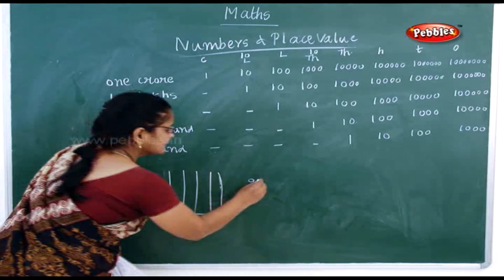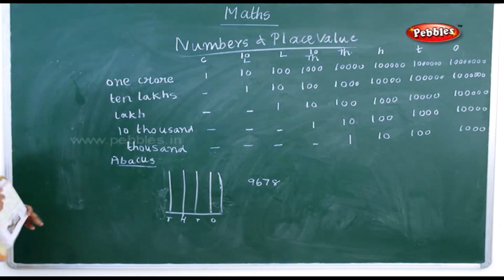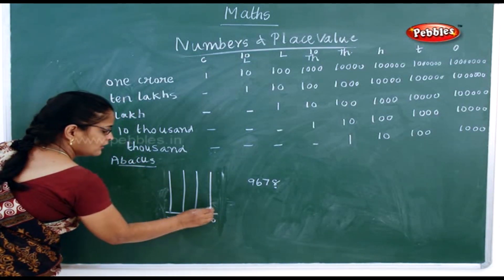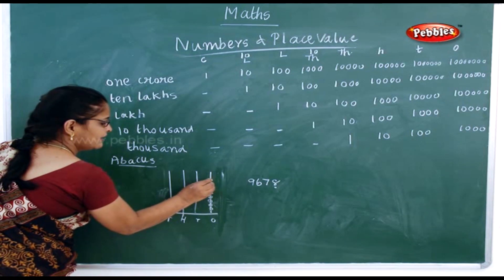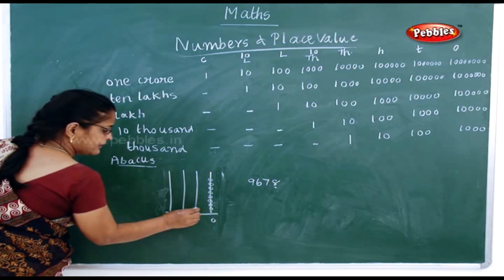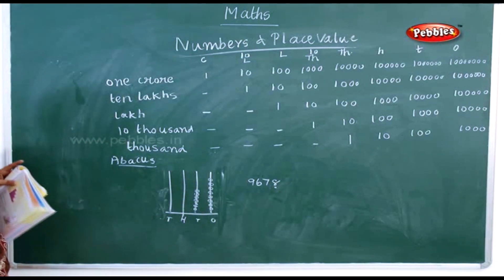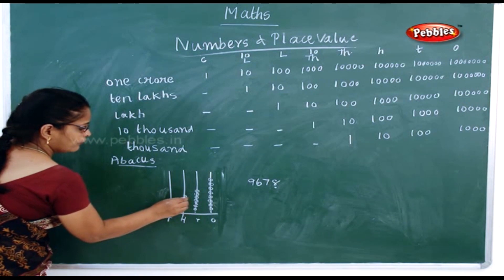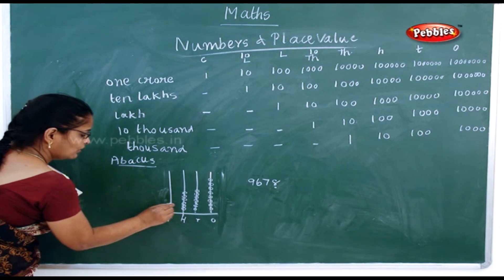Now you wanted to show nine thousand six hundred and seventy-eight on the abacus. In the ones place, how many rings will you have? One, two, three, four, five, six, seven, and eight — so eight rings, meaning eight ones. Now how many tens? Seven — so you'll have seven rings. Now the hundreds: one, two, three, four, five, six.